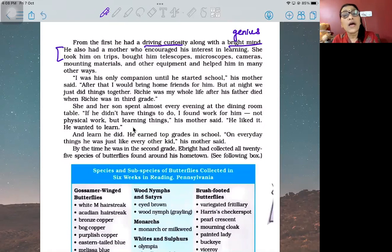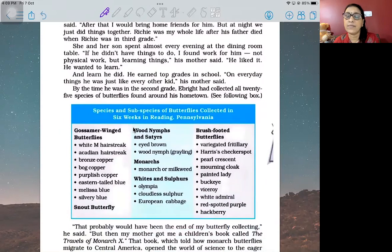He had nothing else to do, so with the small telescope his mother gave him, he would gaze at the night sky. From the first, he had a driving curiosity along with a bright mind - he was very curious and also a genius, good at studies. He also had a mother who encouraged his interest in learning. She took him on trips, bought him telescopes, microscopes, cameras, mounting materials for climbing, and other equipment, and helped him in many other ways. As I said, there's a question about what role his mother played - you need to add this. She said: 'I was his only companion until he started school. After that I would bring home friends for him, but at night we just did things together. Richie was my whole life after his father died when Richie was in third grade.'